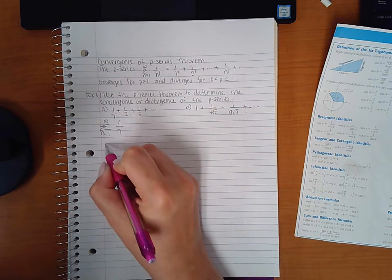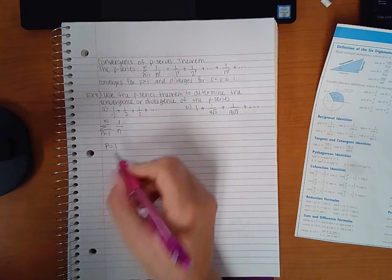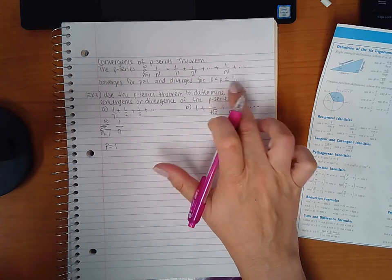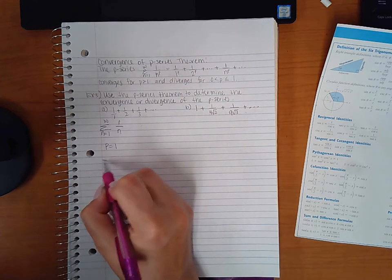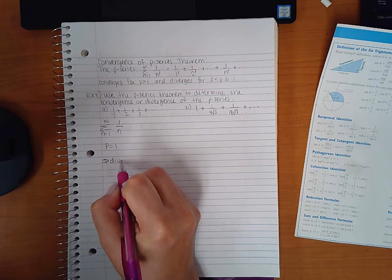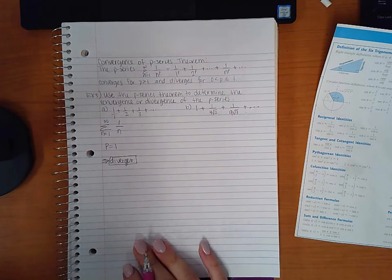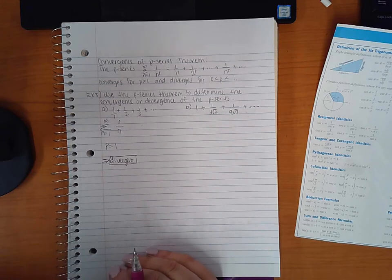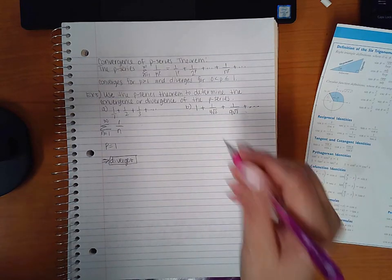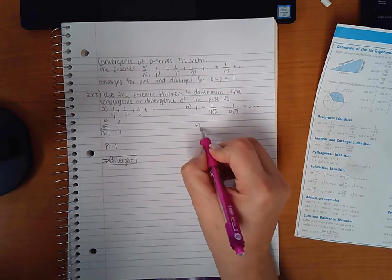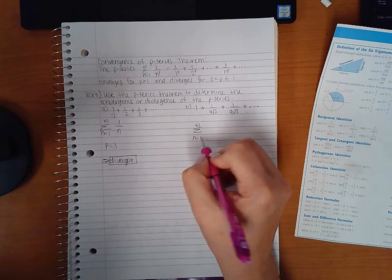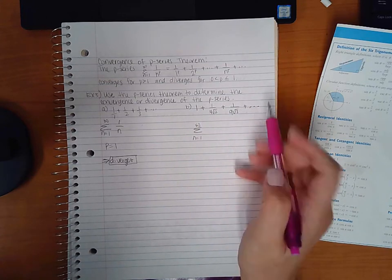And we know that if the p value equals one, then the series diverges. We're done with this particular problem. This one, however, might be a little bit more complicated. So if we go over here and we start off with n equals one again.